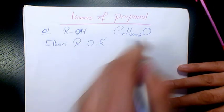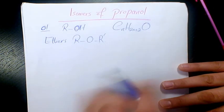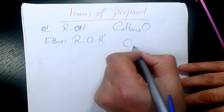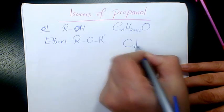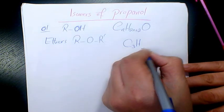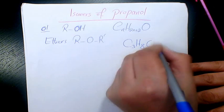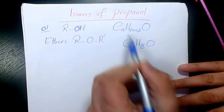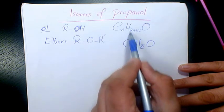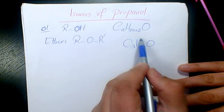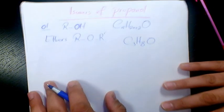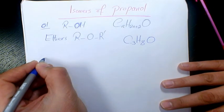So let's write the isomers of propanol, or writing the isomers of C3H8O, because when N is 3, the number of hydrogens is going to be 2 times 3 plus 2, giving H8, plus O.